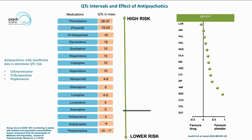Looking at antipsychotics and QTc prolongation: moving from higher risk at the top to lower risk at the bottom, thioridazine, pimozide, and intravenous haloperidol carry the highest risk. From a second-generation antipsychotic perspective, ziprasidone is associated with the highest risk at approximately a 16-millisecond increase from baseline. The safer antipsychotics at the lower end include aripiprazole, paliperidone, asenapine, and lurasidone. A meta-analysis by Stefan Leucht also identifies lurasidone and aripiprazole as safer antipsychotics in the context of QTc prolongation.